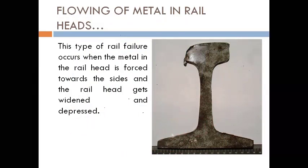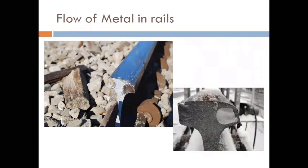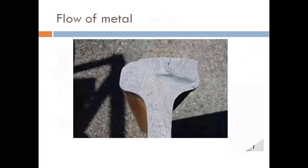Next is flowing of metal in rail heads. This type of rail failure occurs when the metal in the rail head is forced toward the sides, and the rail gets widened and depressed. When traffic intensity is very high, the rail heats up repeatedly, and due to heating or chemical composition, the metal becomes so soft that it flows in one direction — visible as flow of metal to one side.